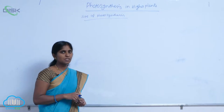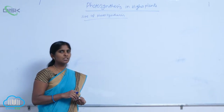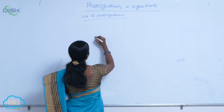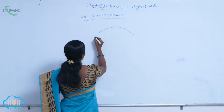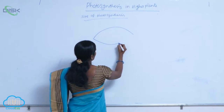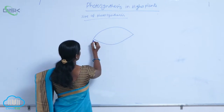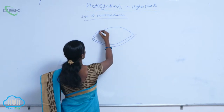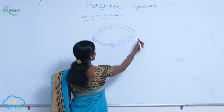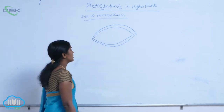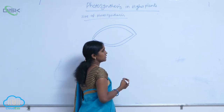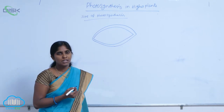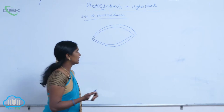The site of photosynthesis is the chloroplast. Chloroplasts are present in leaves, and a large number of chloroplasts are found in the mesophyll cells of plant leaves. Here is the structure of the chloroplast — it is the cell organelle where photosynthesis is conducted.